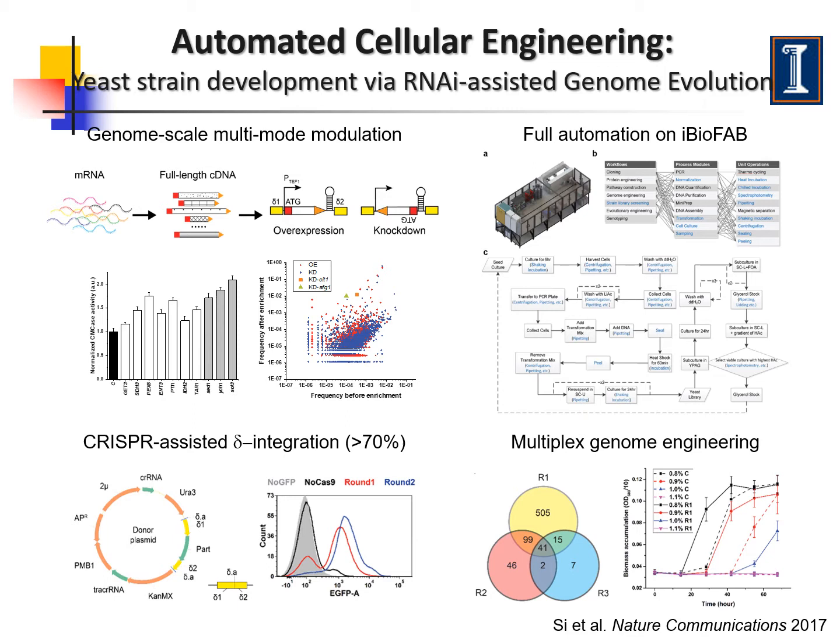More recently, we developed a fully automated workflow for metabolic engineering of Baker's yeast. We used RNA interference technology to perturb gene expression on a genome scale and identified strains with improved tolerance to acetic acid, which is a major inhibitor in lignocellulosic hydrolysate used for biofuel production. This workflow includes construction of the RNA interference library, DNA transformation, library screening, and cell cultivation, which takes about two weeks to complete one round of metabolic engineering.